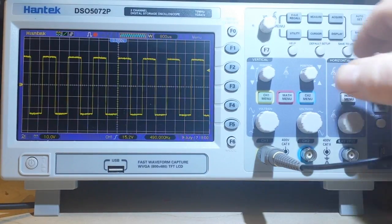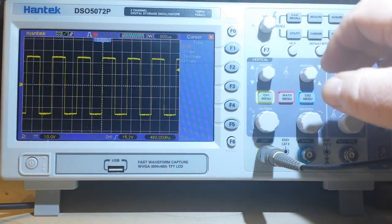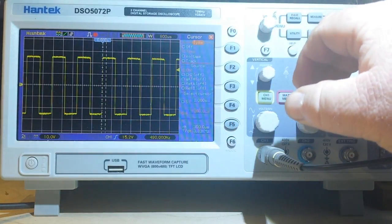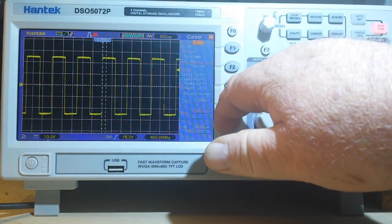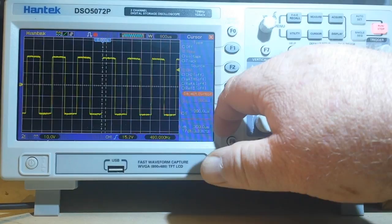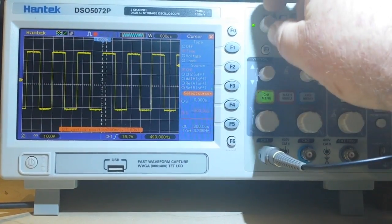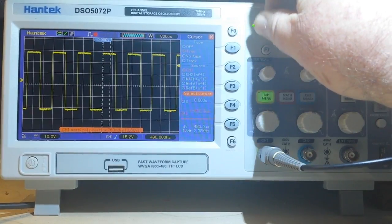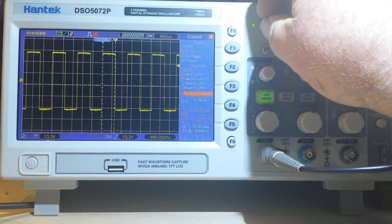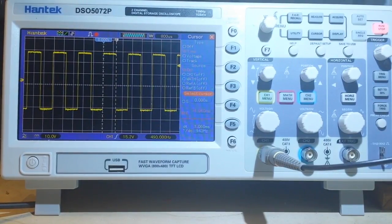So I'm going to stop the scope. I'm going to bring up the cursor menu. We're going to measure time. So the width of this pulse is—I keep bumping the camera, I apologize.